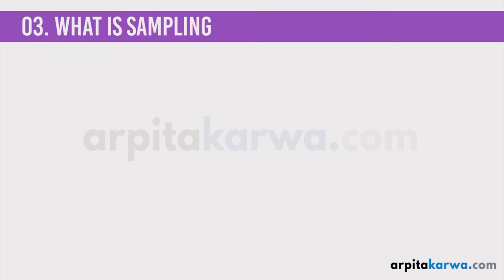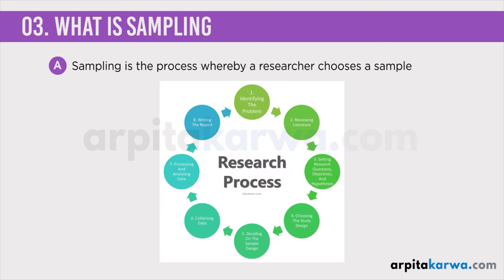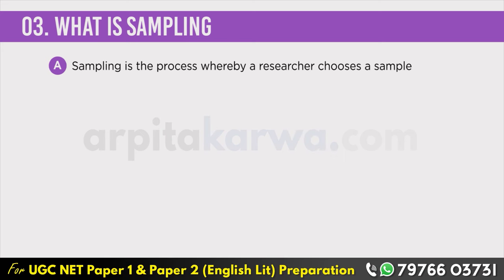Now let us look at what sampling is. Sampling in simple terms is a process whereby a researcher chooses a sample. There are various ways in which we can choose a sample, and any error made by the researcher in this regard will severely affect the research process. Therefore, you need to be very specific about the sampling type and the sampling method that you are employing in order to generate a sample. If you go back to the steps in the research process, you will find that one of the most crucial steps is to generate a sample or to devise the procedure of sampling.